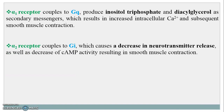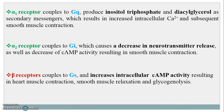Whereas alpha 2 receptors couple to Gi type G protein receptors, which causes a decrease in neurotransmitter release as well as a decrease in cyclic adenosine monophosphate (cAMP) activity, resulting in smooth muscle contraction and glycogenolysis. Whereas all beta receptors couple to Gs type G protein receptors and increase intracellular cyclic adenosine monophosphate activity, resulting in heart muscle contraction, smooth muscle relaxation, and glycogenolysis.